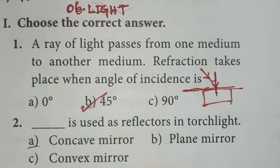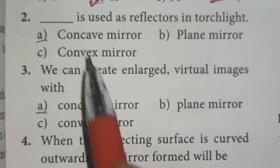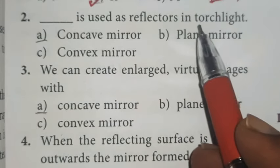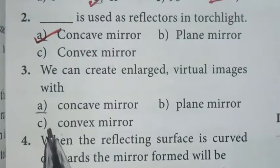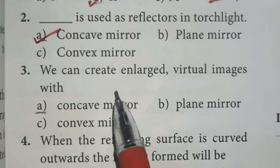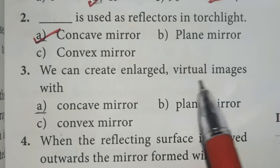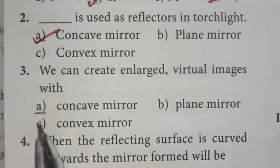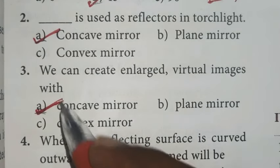So option B is the right answer. Second one, which is used as reflectors in torchlight? Option A is the right answer, concave mirror. Third one, we can create enlarged virtual images with option A, concave mirror. Option A is the right answer.